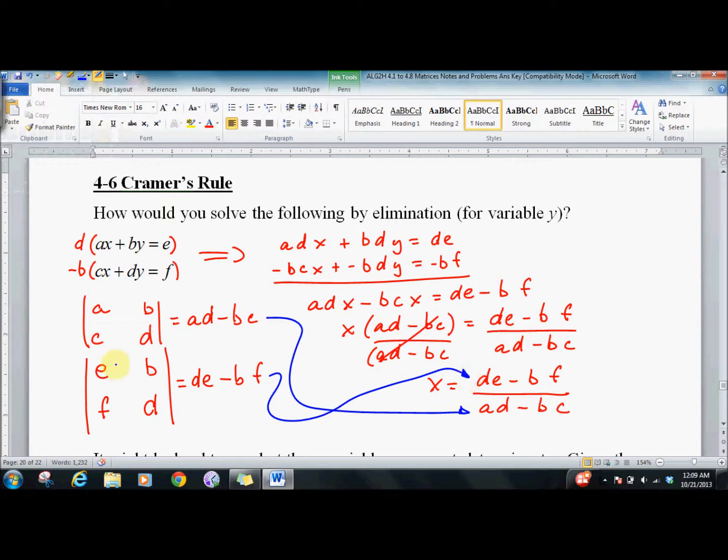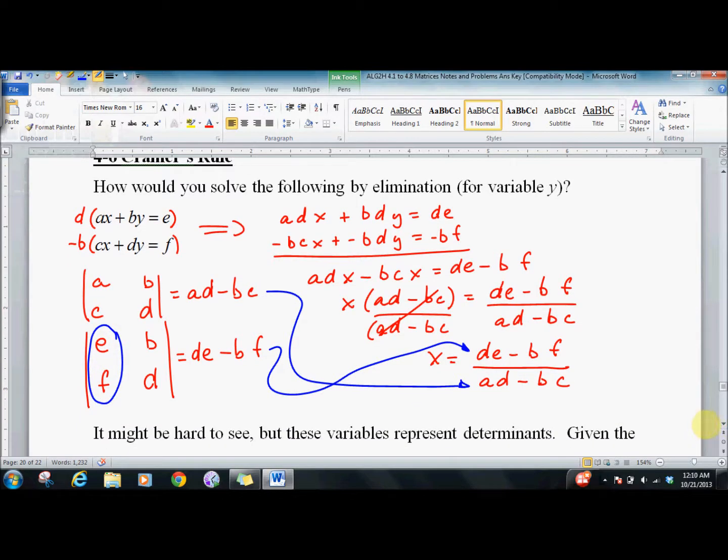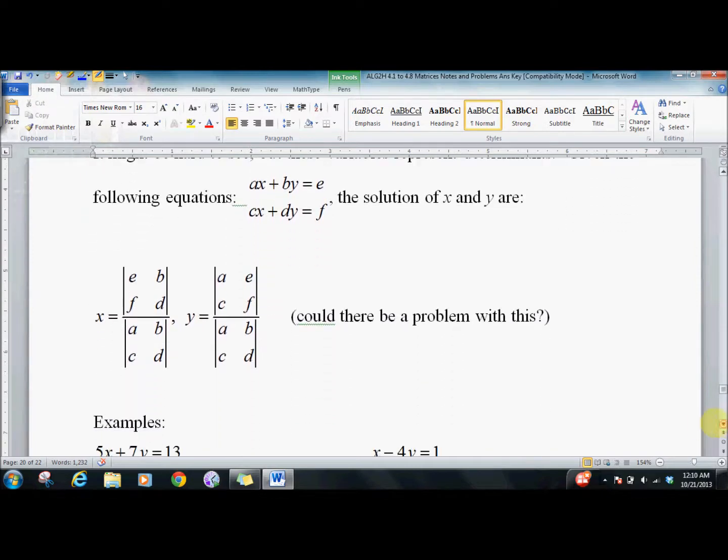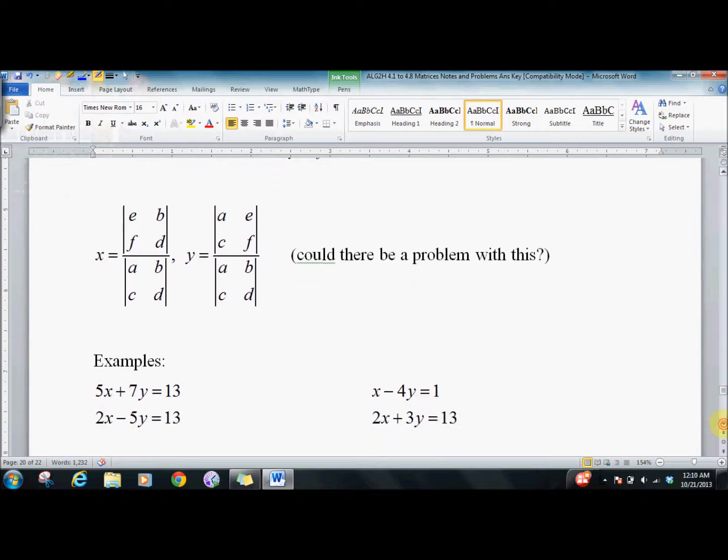Those are determinants. Notice if I want to find the x value, I replace the x coefficients. You can do the same thing for y. I'm not going to work it out, but here they are typed up. We have the determinant of the coefficient matrix on the bottom. Take the e, f and plug it in for the x coefficients, and that goes in the numerator for x. Take e, f and plug it in for the y coefficients, and that goes in the numerator for y. That's how I keep it straight. So let's do a couple examples.